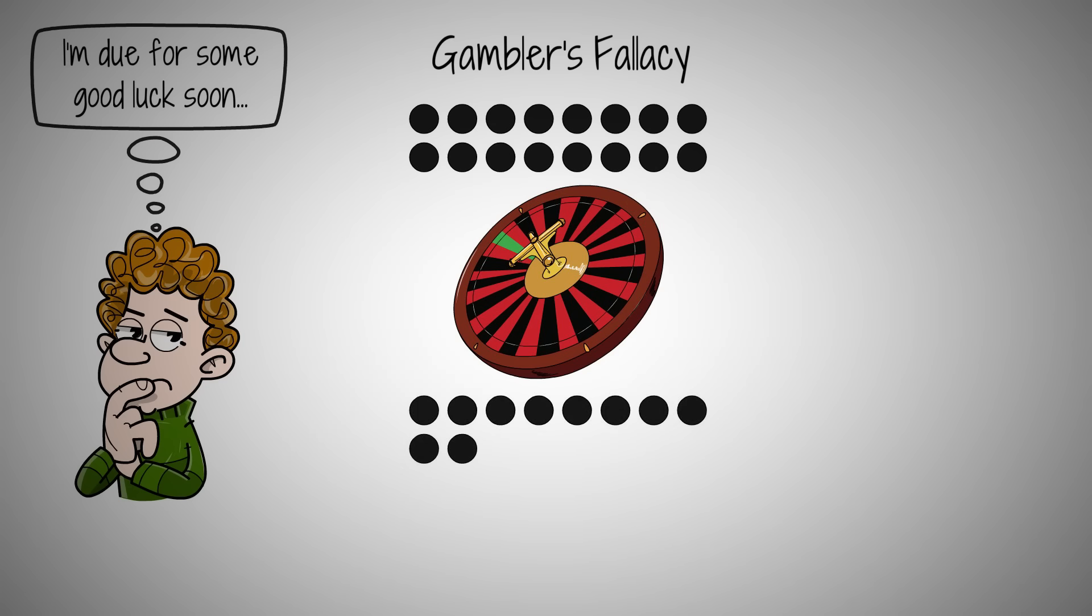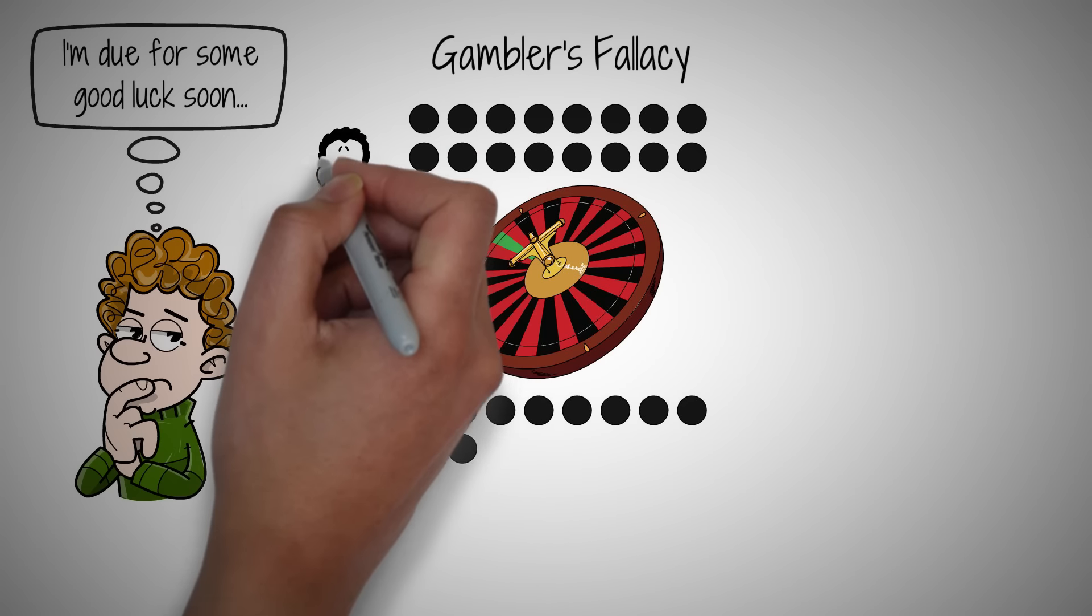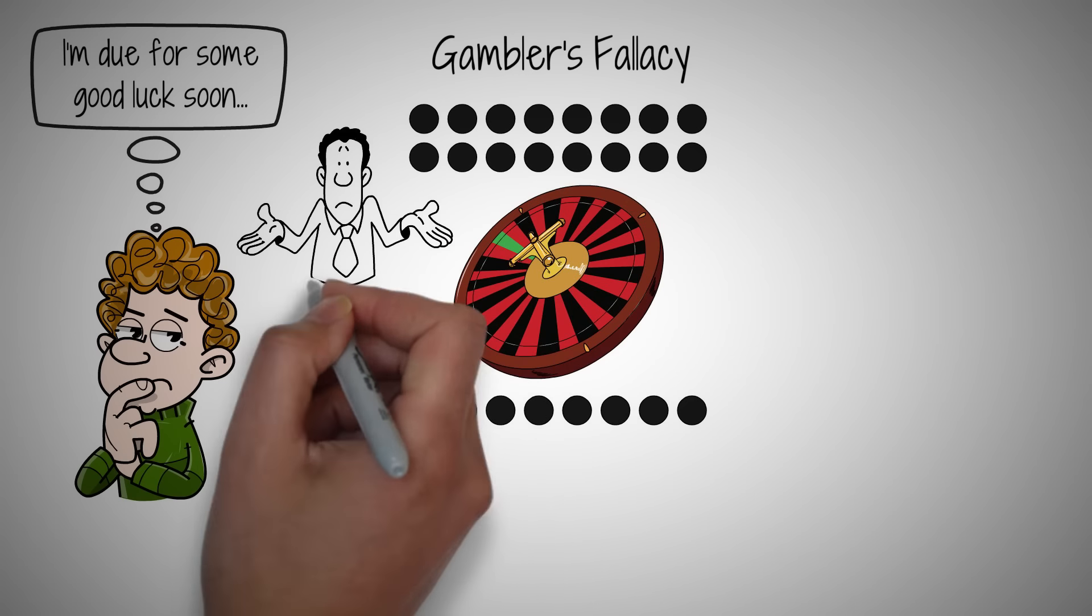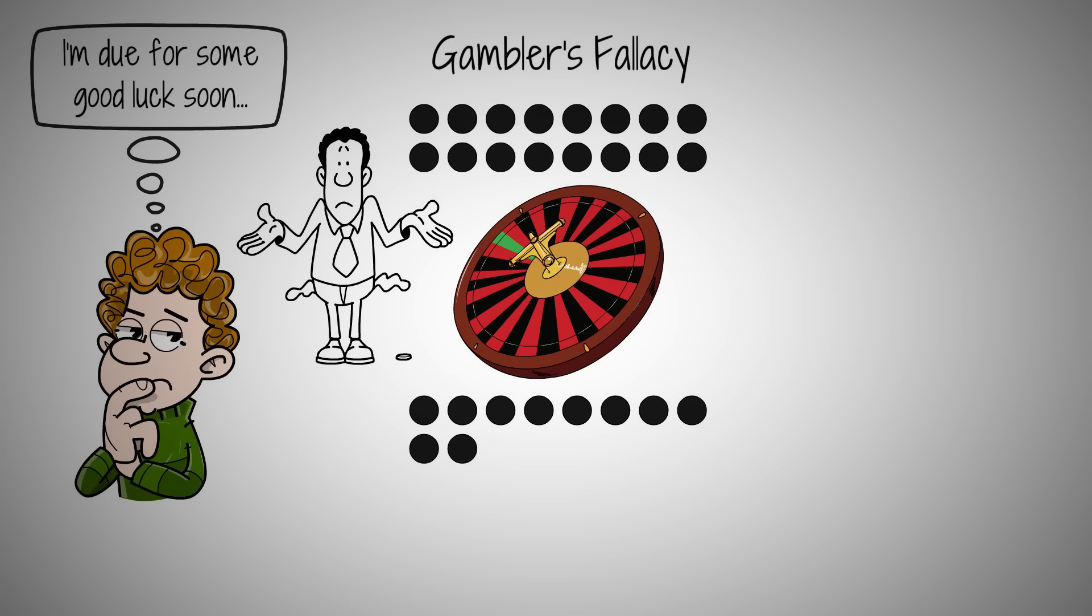The gambler's fallacy is a psychological trap, where we mistakenly believe that if something happens more frequently than normal, during a given period, it will happen less frequently in the future. Or vice versa.